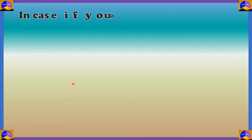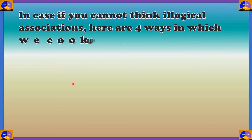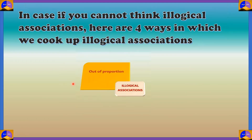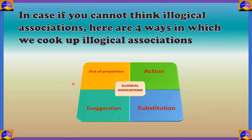We've been stressing on illogical associations, but for most people brought up to think logically, illogical associations can be hard to create. In case you cannot think illogically, here are four ways to make something illogical: the first is outer proportion, second is action, third is exaggeration, and fourth is substitution.